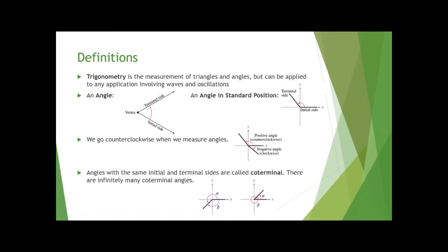Angles with the same initial and terminal sides are called co-terminal angles. There are infinitely many of these because you can just keep going around in a circle and create different angle measurements.